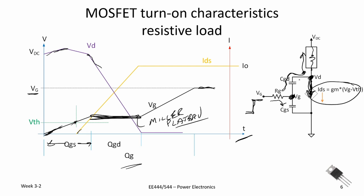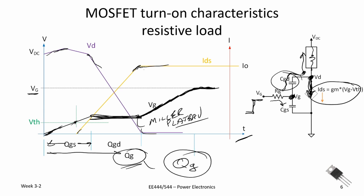Then there's charge associated with charging up the Miller capacitance — the gate-to-drain capacitance. Finally, after we've hit near steady state and the drain voltage has dropped, the gate-to-source voltage continues to rise to whatever our final value is. This total charge is called Q_G, and every data sheet will specify Q_G. Often they also specify the gate-to-source charge and the gate-to-drain charge required for the device. This is a resistive load turn-on.